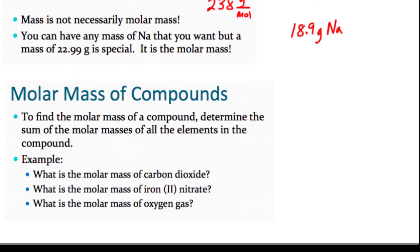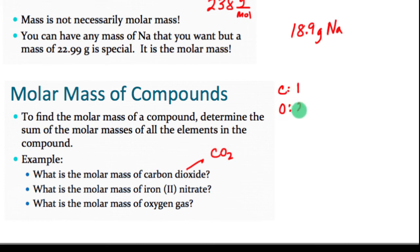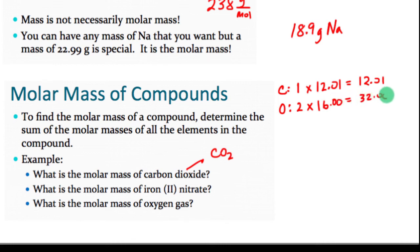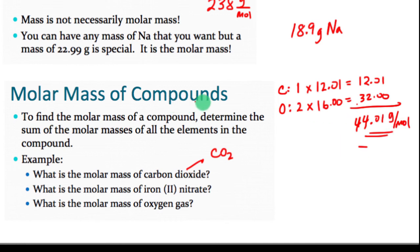For compounds, instead of just looking up one element, you find the molar mass of each element in the compound and add them up. For carbon dioxide, which has one carbon and two oxygens, I go to the periodic table: carbon is 12.01, and there's one of them, so 12.01. Oxygen is 16, and there are two of them, so 32. Adding those up gives 44.01 grams per mole for carbon dioxide.